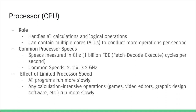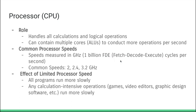Processor speed is measured in gigahertz, which refers to the number of fetch-decode-execute cycles per second. One gigahertz is 1 billion FDE cycles. Common processor speeds are 2, 2.4, or 3.2 gigahertz, though some computers have 4 or even 5 gigahertz processors. The effect of limited processor speed is that all programs run more slowly — particularly those making heavy use of the processor, such as games, video editors, and graphic design software, which involve a great deal of mathematical calculations.